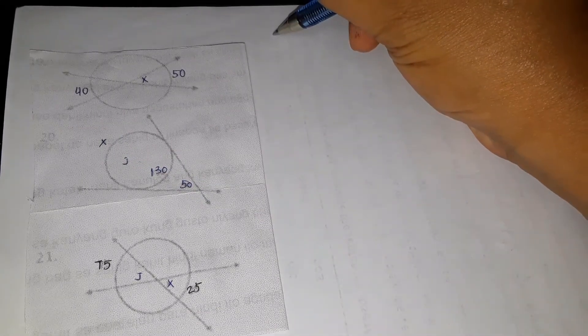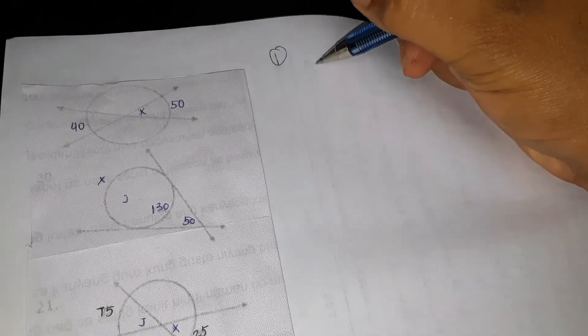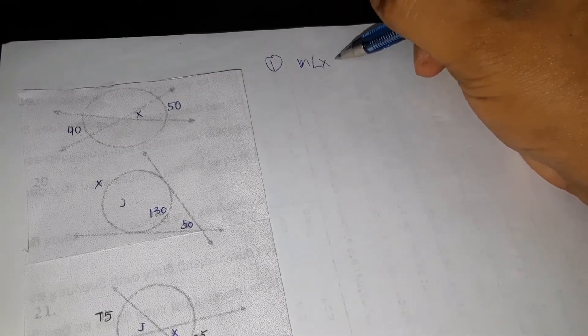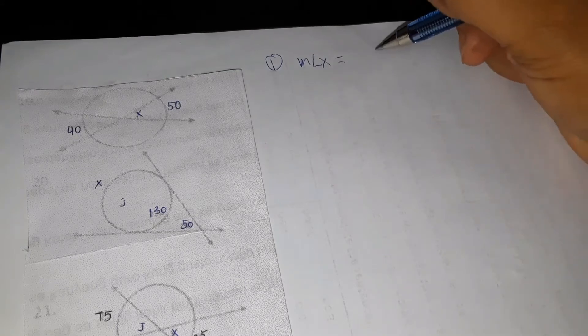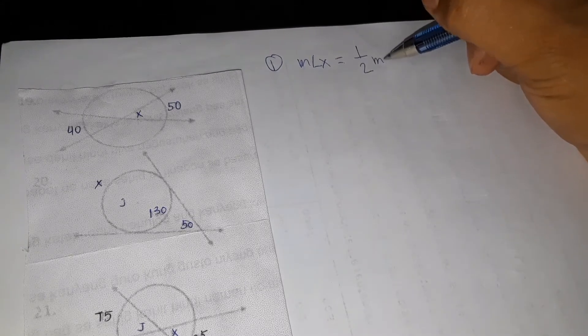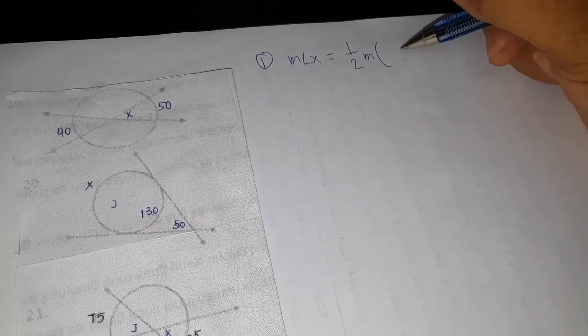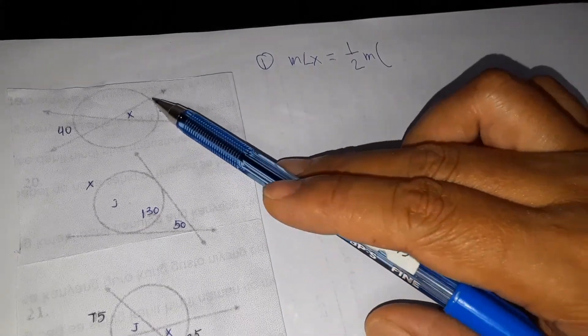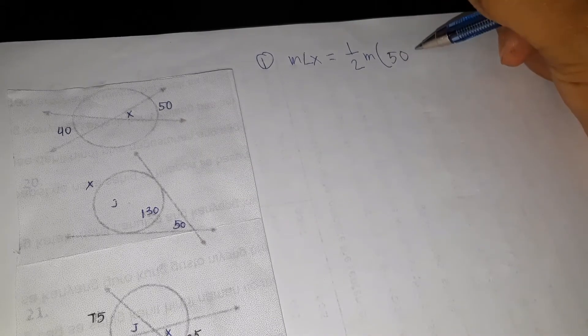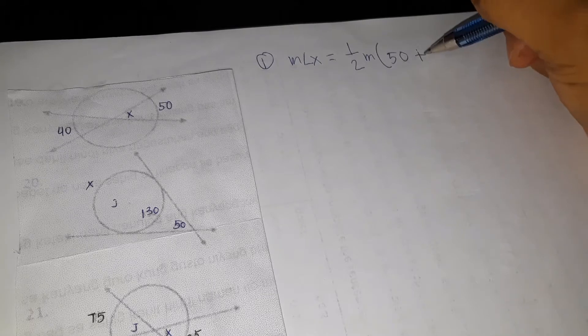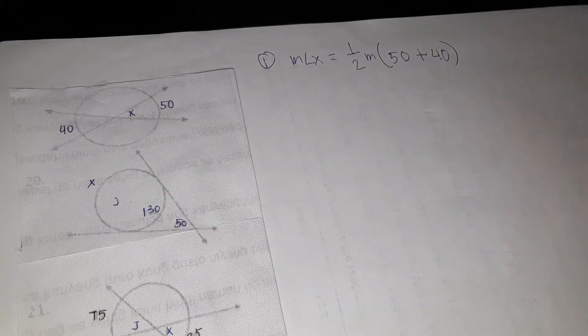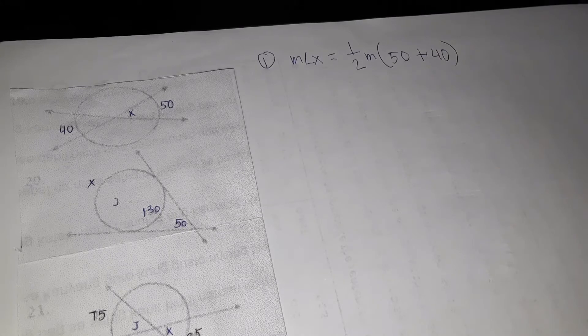So we will do number 1. We have the measurement of angle X is equal to one half the measurement of the intercepted arc, arc 50 and arc 40. They're intercepted arc. So that is our equation.